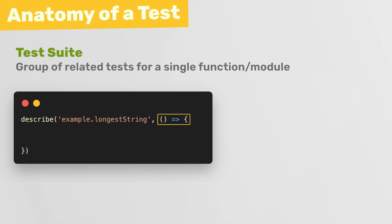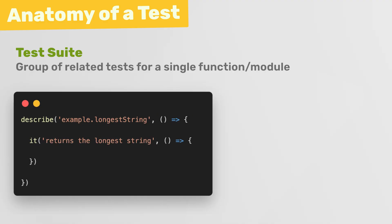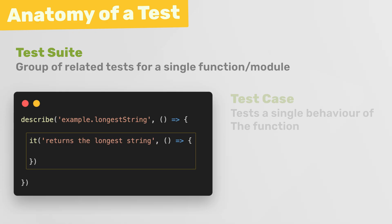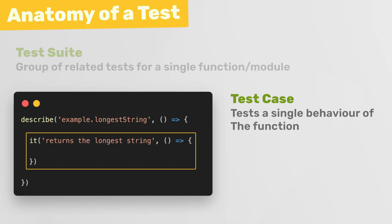The second argument to describe is a function itself, and it's inside this function that we create all the individual tests. We do that using another Vitest function called it, which also takes two arguments. The first is a string describing the individual thing we want to test — it kind of starts a sentence, like 'it returns the longest string'. The second argument is a function containing all the testing logic. In testing terminology, this block is called a test case.